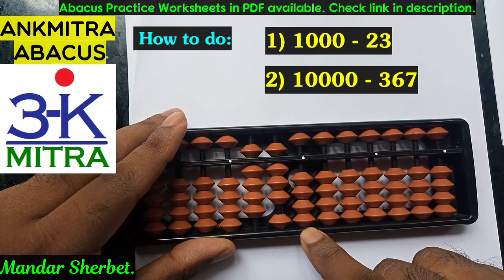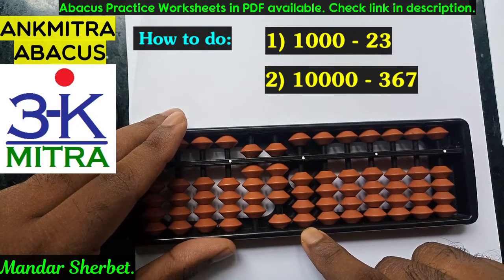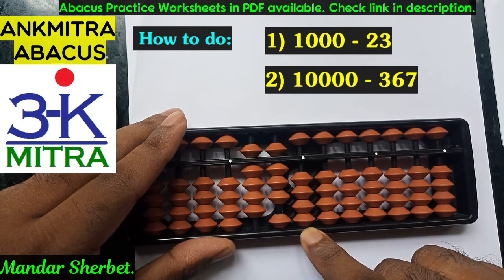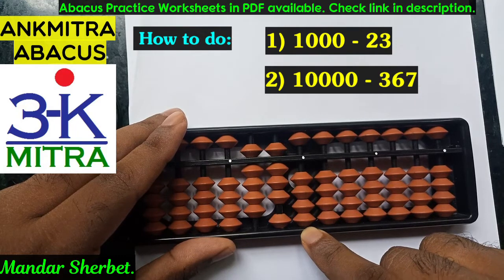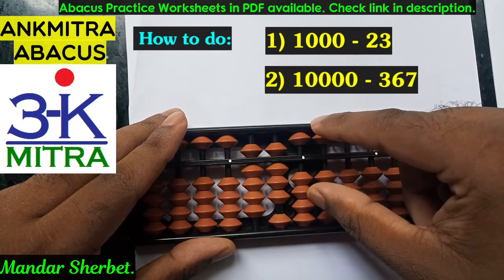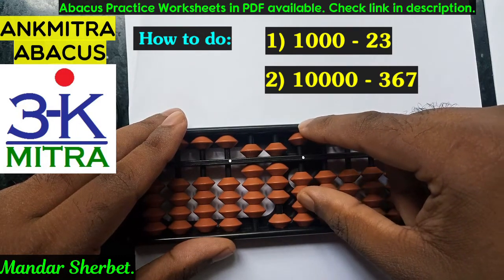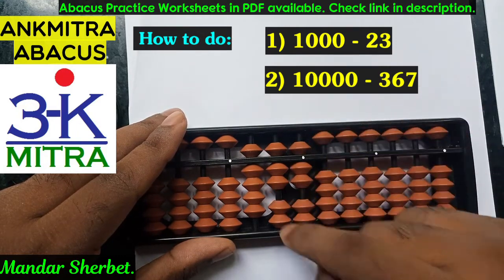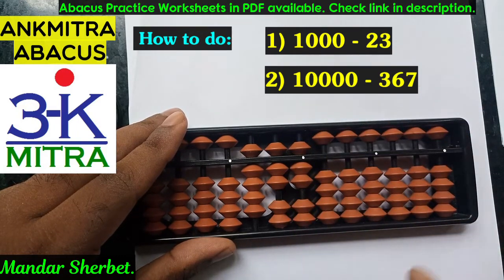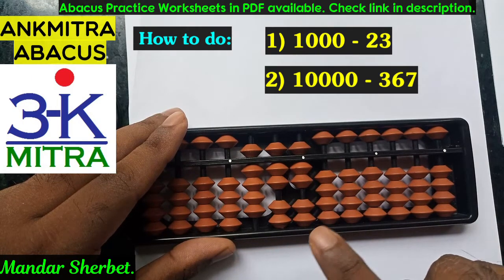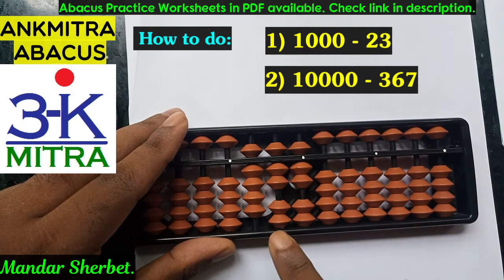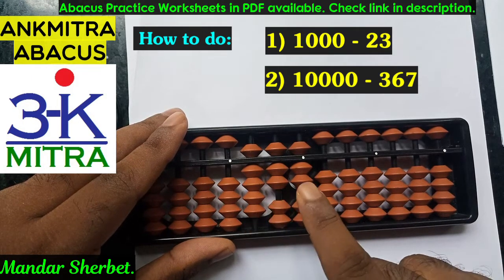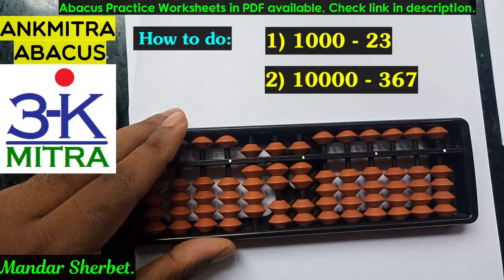Coming to the units place, for subtraction of 3, we will have to use its big friend formula again, which is plus 7 minus 10. So plus 7 minus 10, and the subtraction of 23 is done. The answer that we have for 1000 minus 23 is 977.